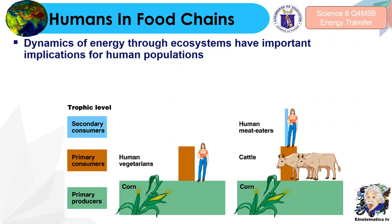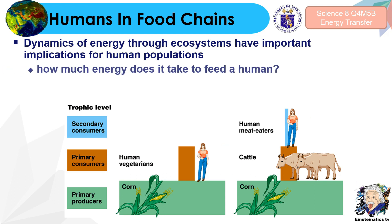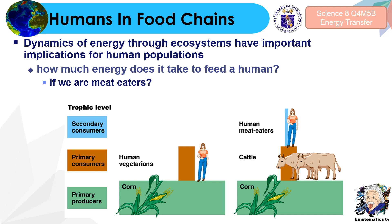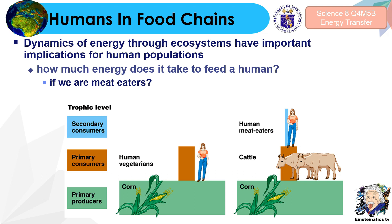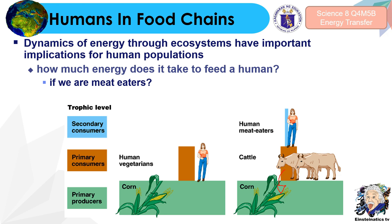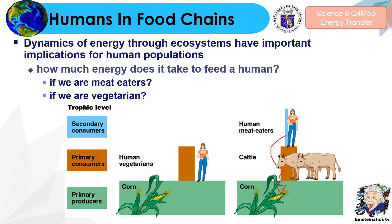Now, let us explore how humans fit into food chains. The dynamics of energy through ecosystems have important implications for human populations. How much energy does it take to feed a human? If we are meat eaters, it takes a lot more energy — cows need a lot of producers to support their processes, so it takes more producers to ultimately feed humans. Unlike if we are vegetarian, where you directly get energy from the producers.